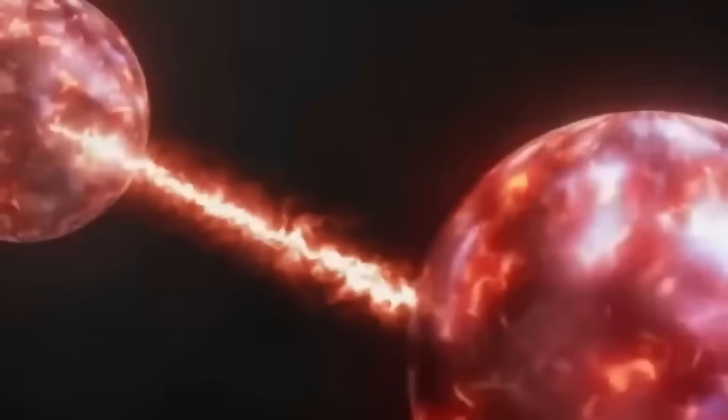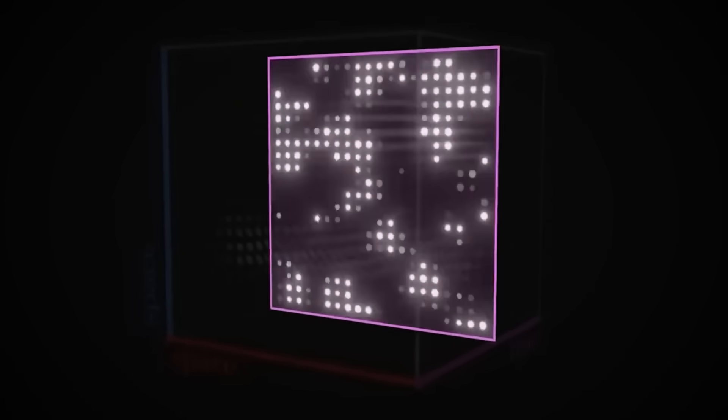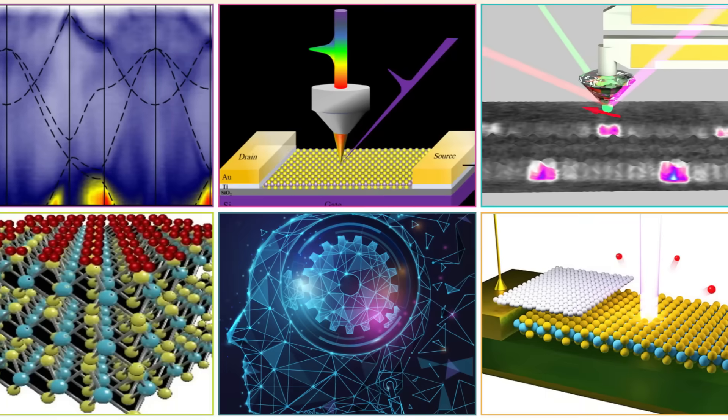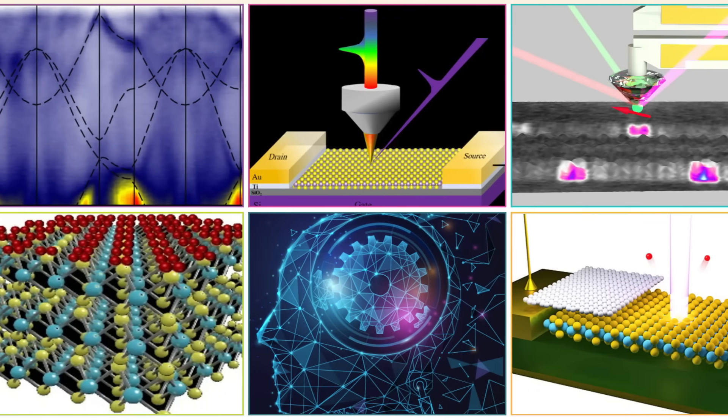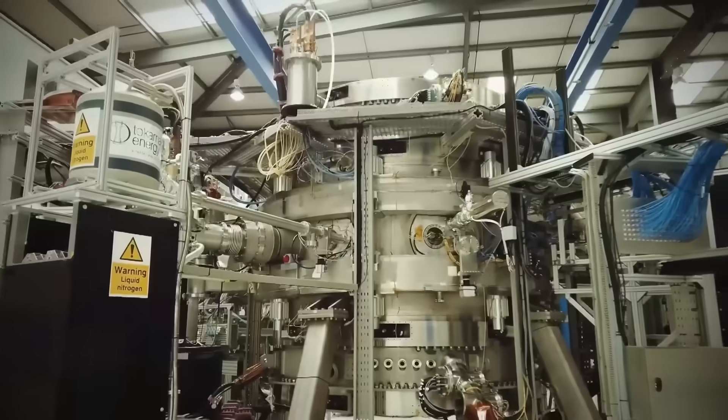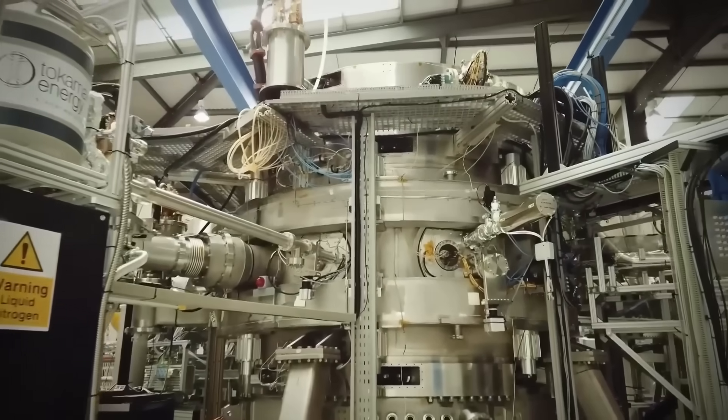Because what MIT may have glimpsed isn't just a glitch in their equipment. It could be the first proof that reality has layers, quantum layers that overlap and interact in ways we never imagined possible.